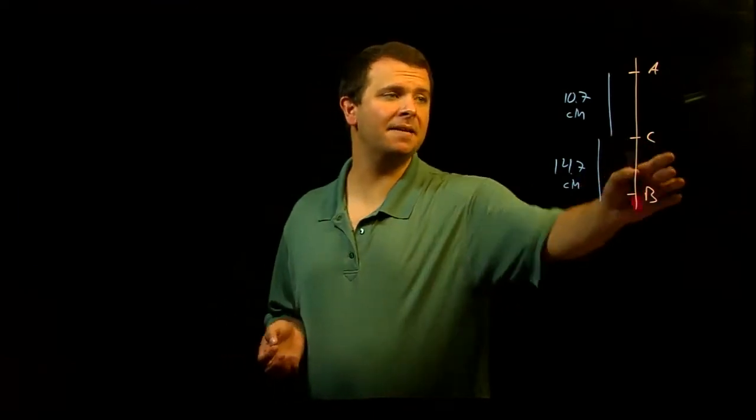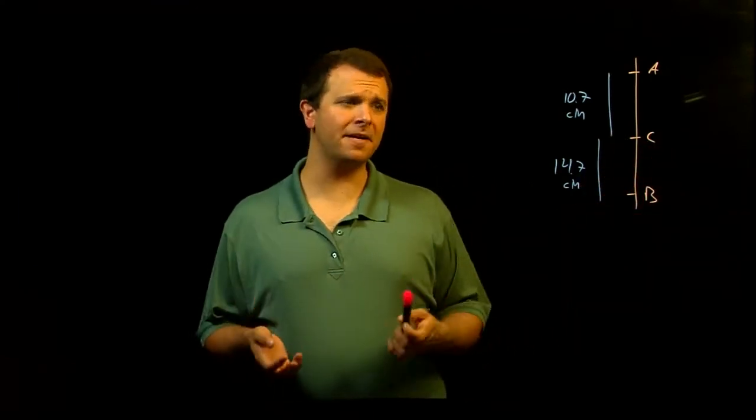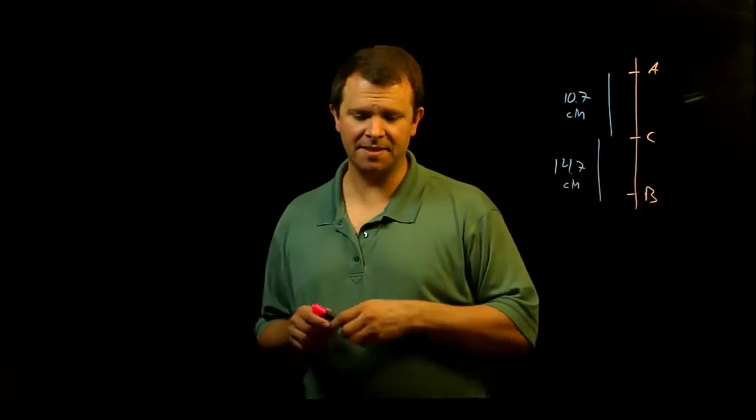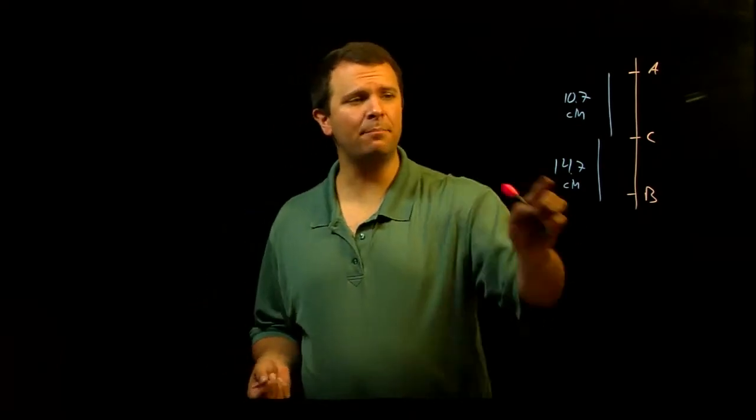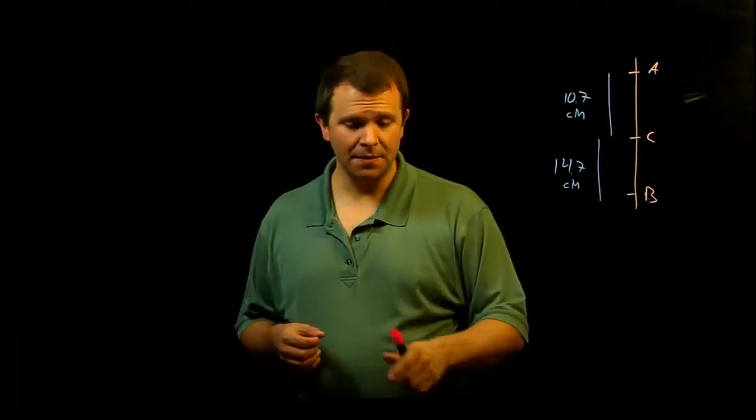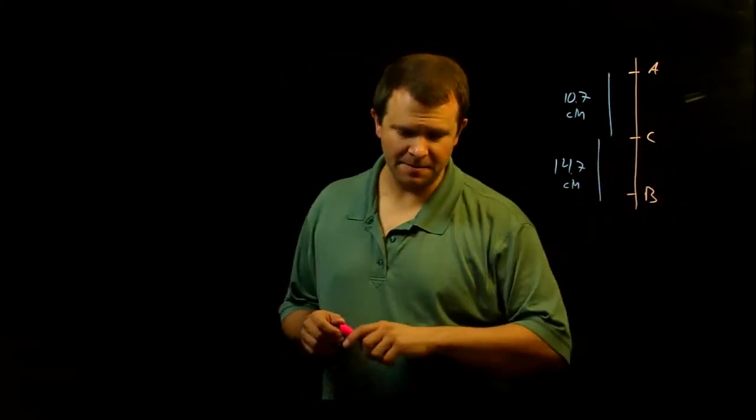Similarly, C and B are separated by 14.7 centimorgans, which means that in any gamete there's a 14.7% chance of recombination between C and B.